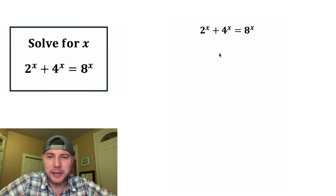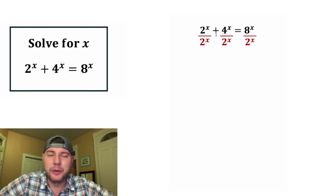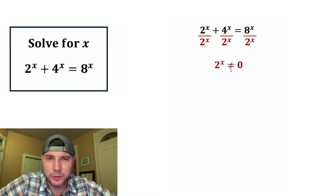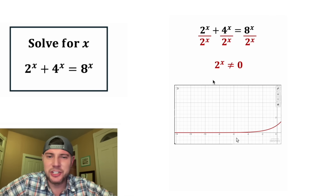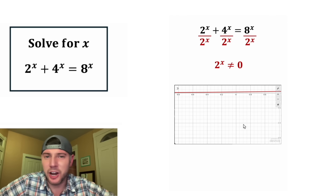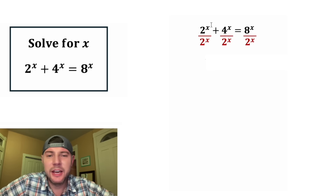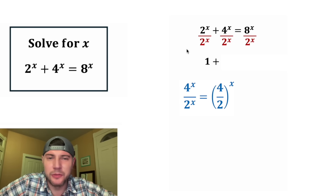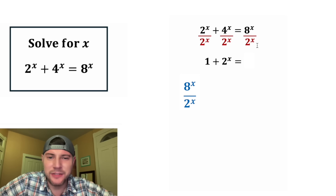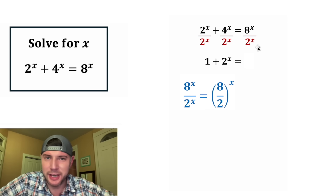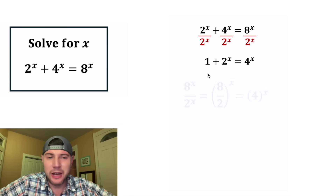For the first step, let's divide everything by 2 to the x. Before we do the division, we want to note that 2 to the x cannot equal 0. There is no value of x that would make 2 to the x equal to 0. Here it is in Desmos — it's asymptotic towards 0, but it will never equal 0. So it's safe for us to divide by 2 to the x. 2 to the x divided by 2 to the x is 1, and 4 to the x over 2 to the x equals 2 to the x, and 8 to the x divided by 2 to the x equals 4 to the x. So now we have 1 plus 2 to the x is equal to 4 to the x.